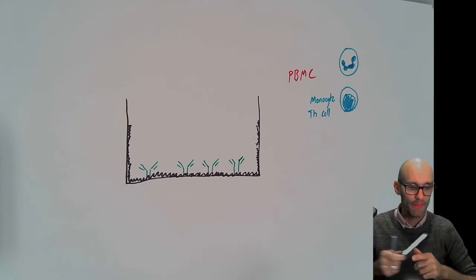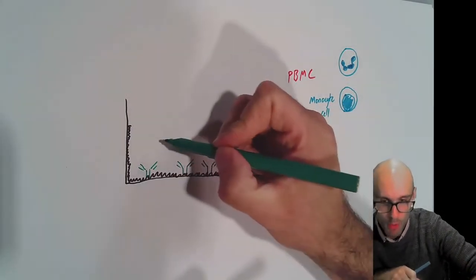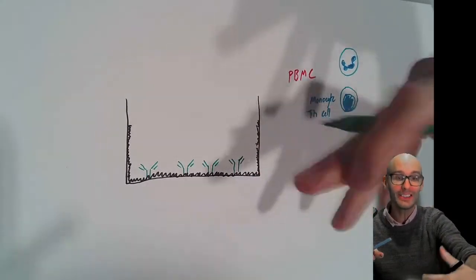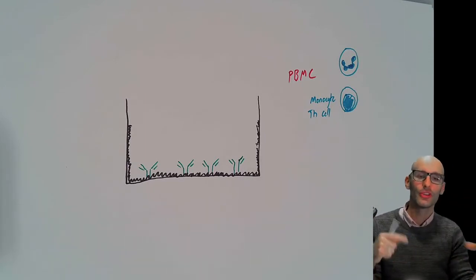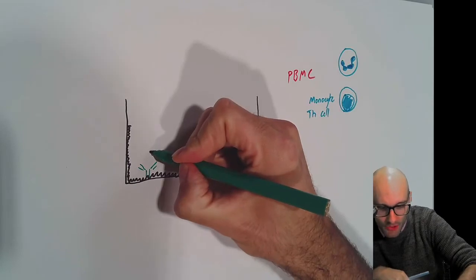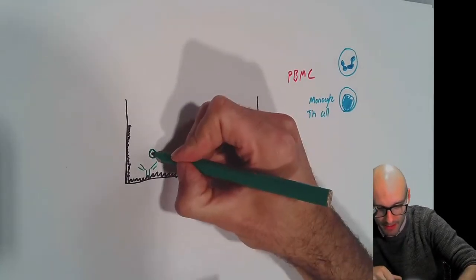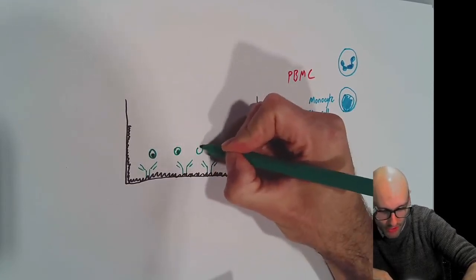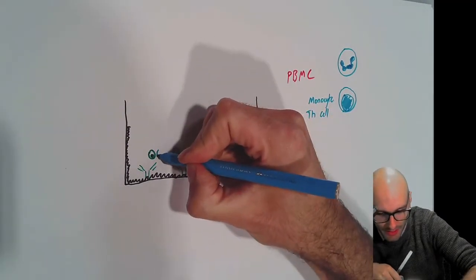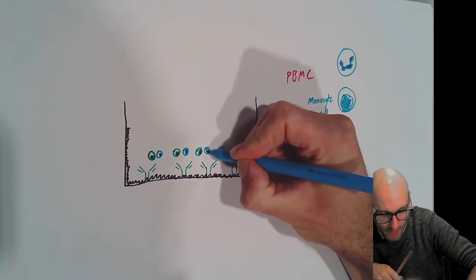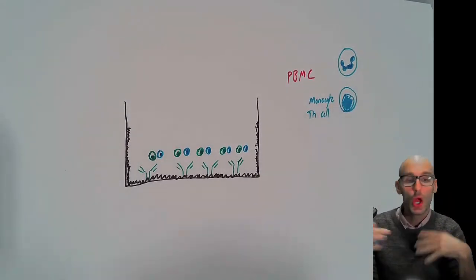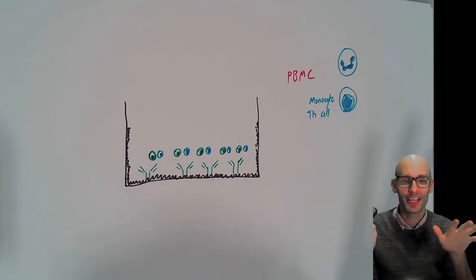I'll draw the monocyte in green and the T cell in blue. What we then do — and this is where it gets peculiar — we put the cells into the ELISA plate. That's very unusual. Normally we have the cells in a growth media plate, take the media off, and run an ELISA on it. In the ELISpot, we put the cells into the coated plate. We add a bunch of monocytes and T helper cells, and then we put in an antigen — the thing that we are interested in.